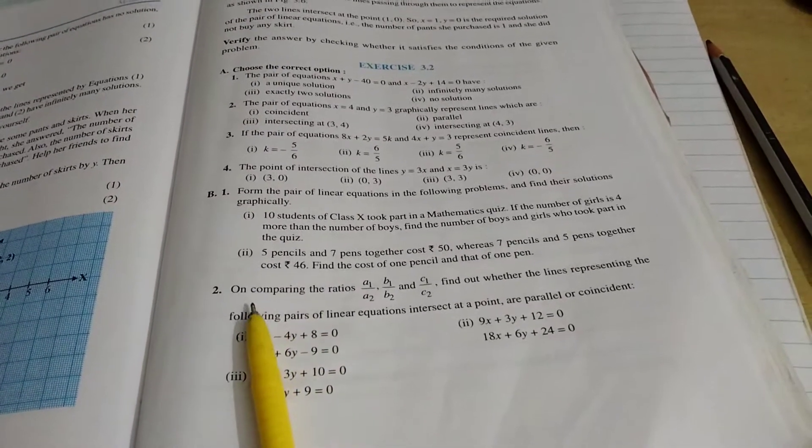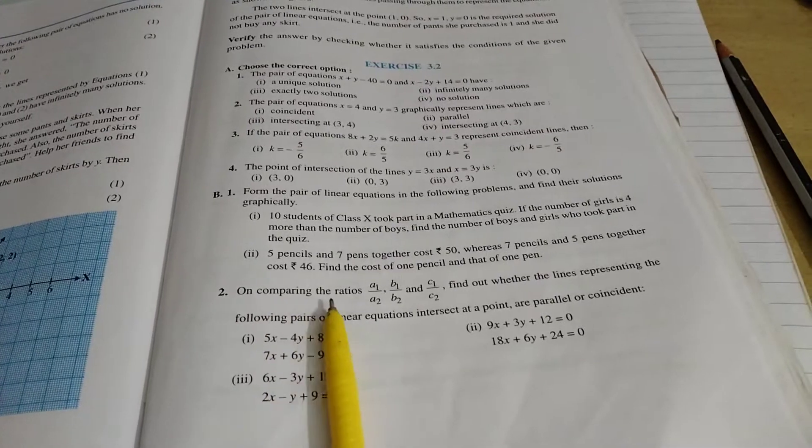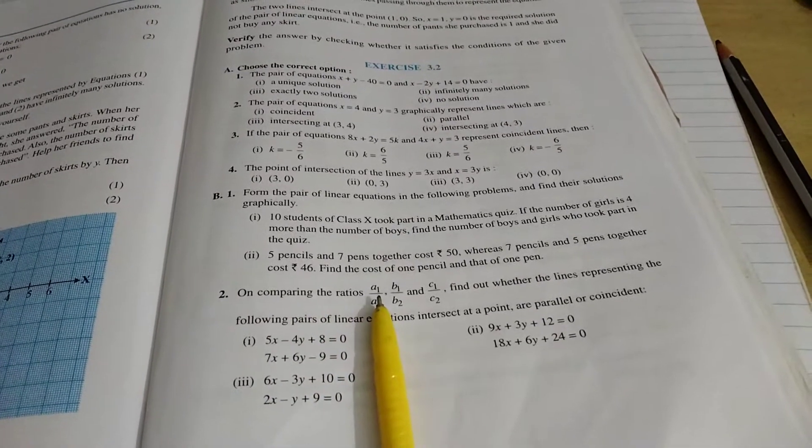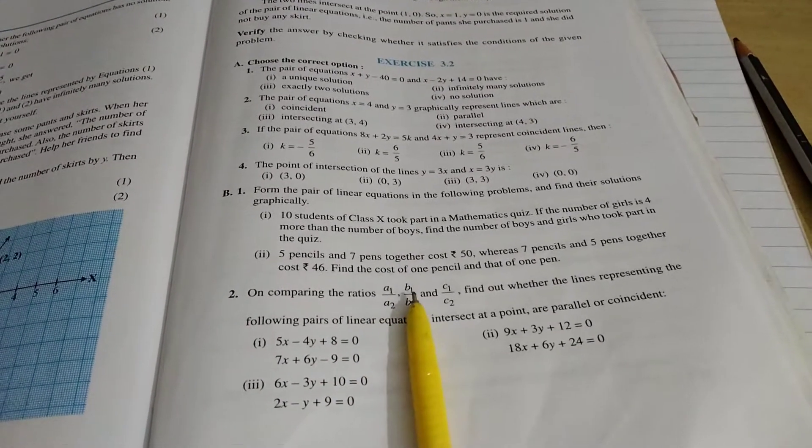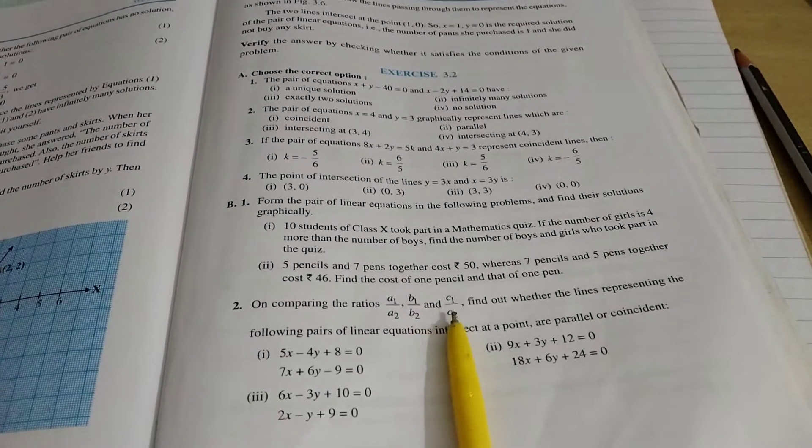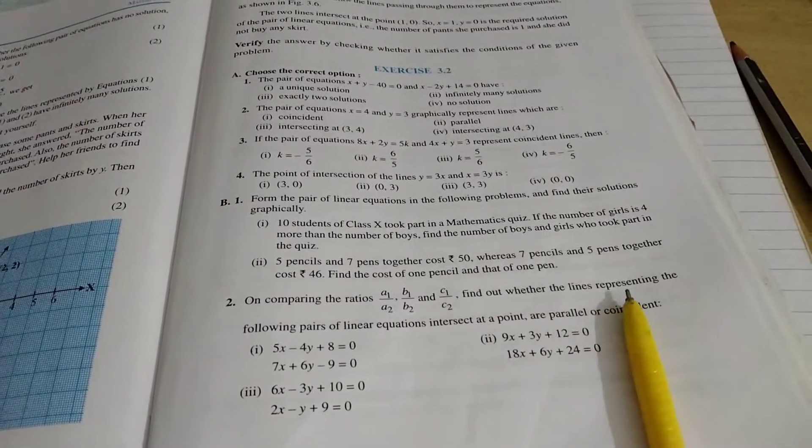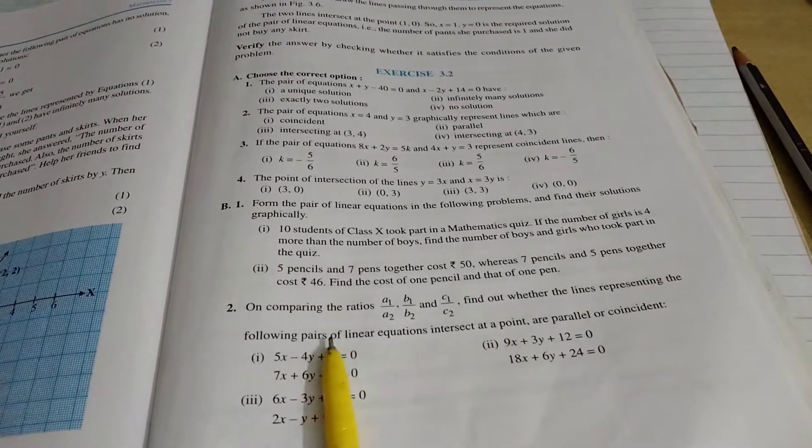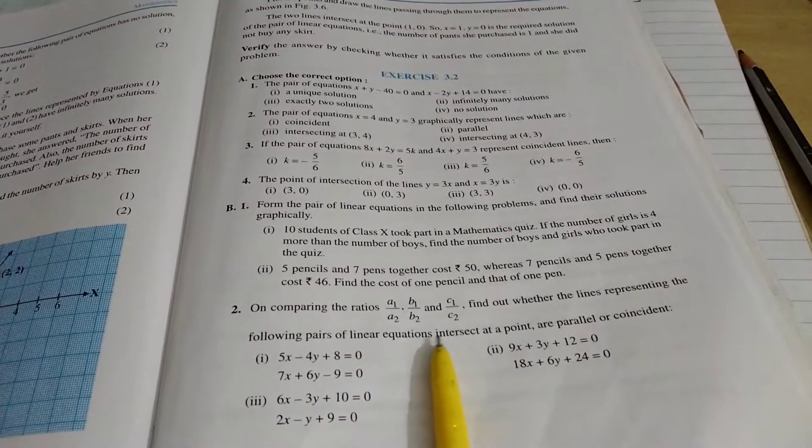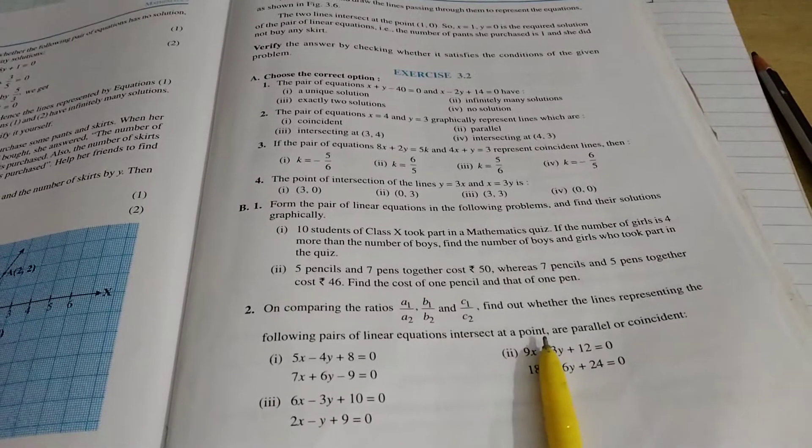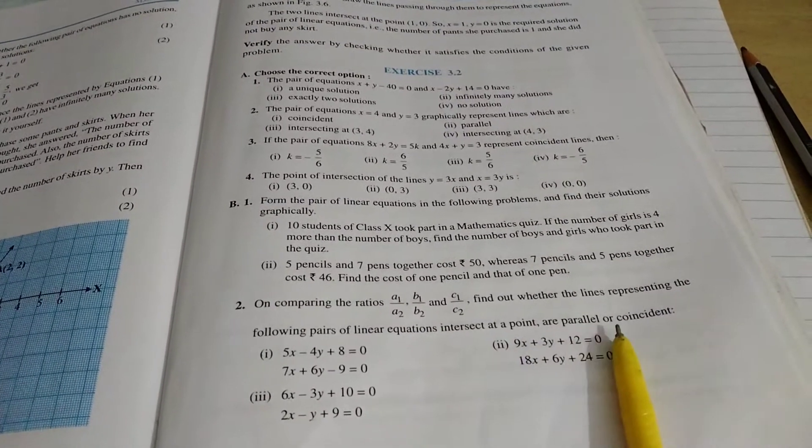Your question is on comparing the ratio of A1 by A2, B1 by B2, and C1 by C2. Find out whether the line representing the following pair of linear equations intersect at a point, are parallel or coincident.